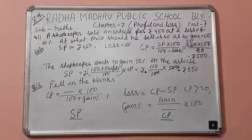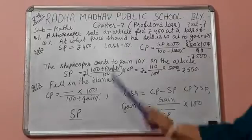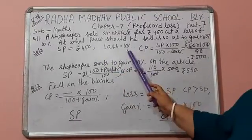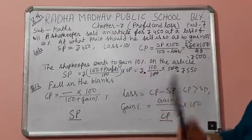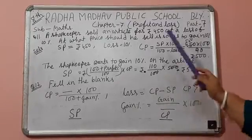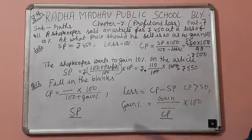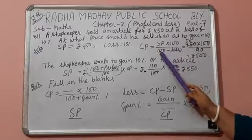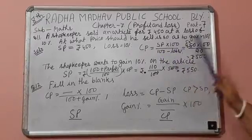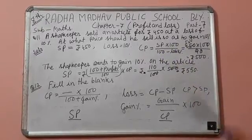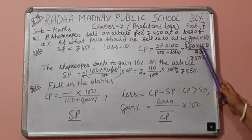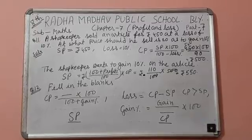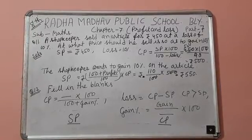Part 1: SP is 450 and loss is 10%. At that time, CP is SP multiplied by 100 divided by (100 minus loss percent). That means 450 multiplied by 100/90, which gives Rs. 500.